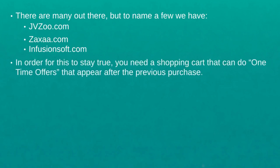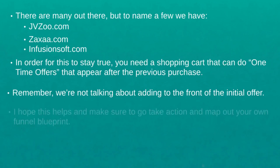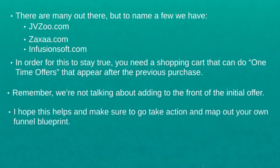Infusionsoft is a lot more complex; Zaxaa.com is typically a good shopping cart system, as is JVZoo.com. In order for this to work properly, you need a shopping cart that can do one-time offers that appear after the previous purchase — not one-time offers added to the initial front-end offer. Make sure you do your due diligence, because some shopping carts claim to support this but actually offer a very different type of one-time offer. I hope this helps — now go take action, map out your own sales funnel, find the right system, and go out there and conquer.